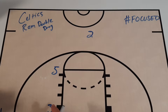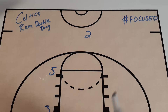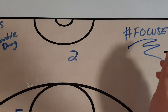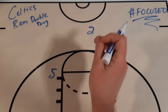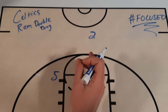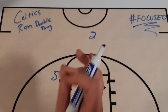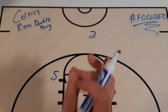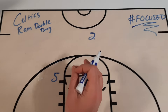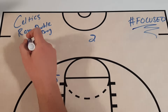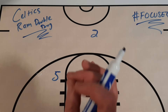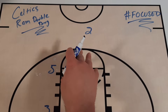What's up, Get Better Basketball community. I'm Coach DeMarco and this is Focused. In today's episode, I'm going to talk to you about a play the Celtics use three out of four possessions in the fourth quarter against the Orlando Magic. It's called the ram double drag — a play with a lot of different options.